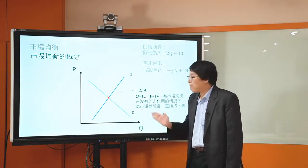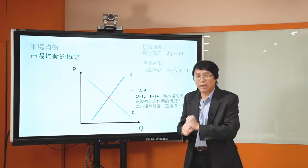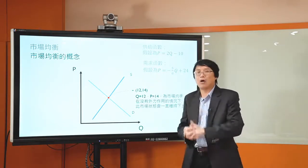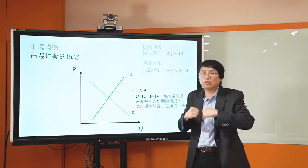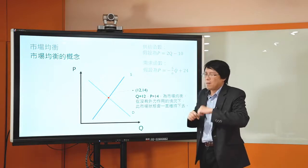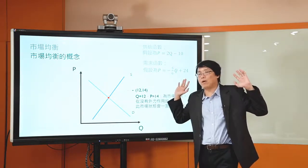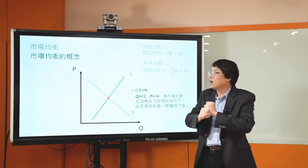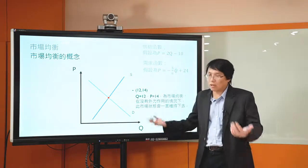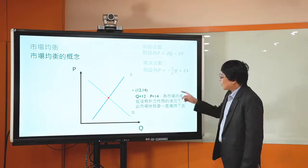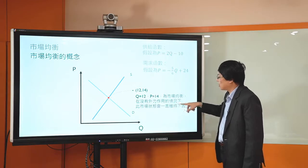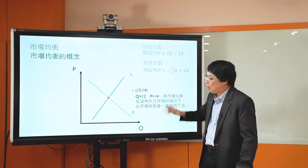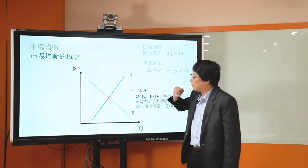剛剛有說到供給線長這個樣子，需求線也長這個樣子，我們就可以算到它們的交點：在Q等於12、價格等於14這個點上。這個點就是說，當價格等於14的情況下，買方的購買意願跟賣方的供貨意願這時候達到平衡，也就是說買方的購買意願跟賣方的供貨意願恰好相等。所以我們說這個時候叫做均衡——在這個市場裡面，兩種力量：買方的力量（購買意願）、賣方的力量（供貨意願），在這個時候達到平衡。